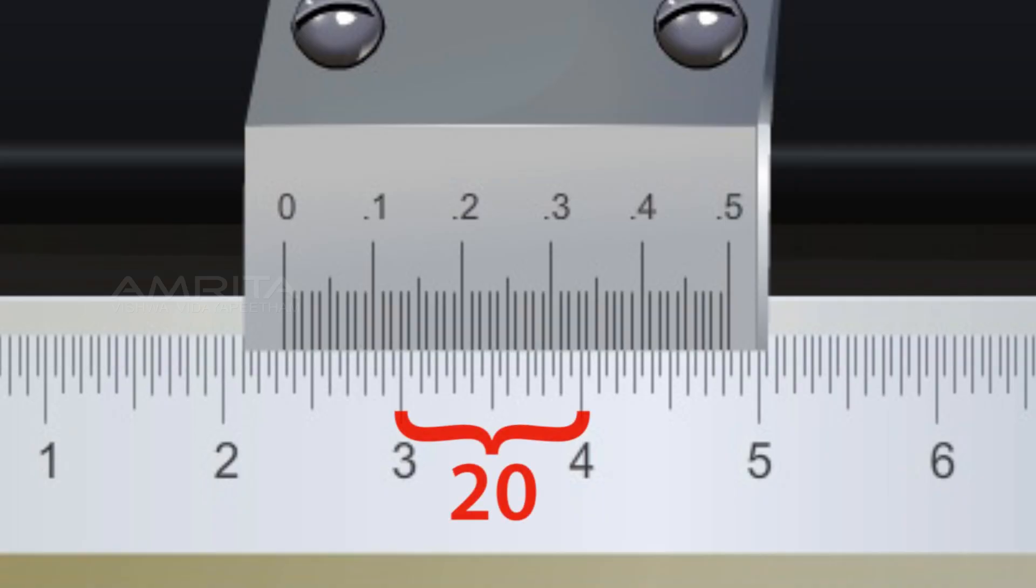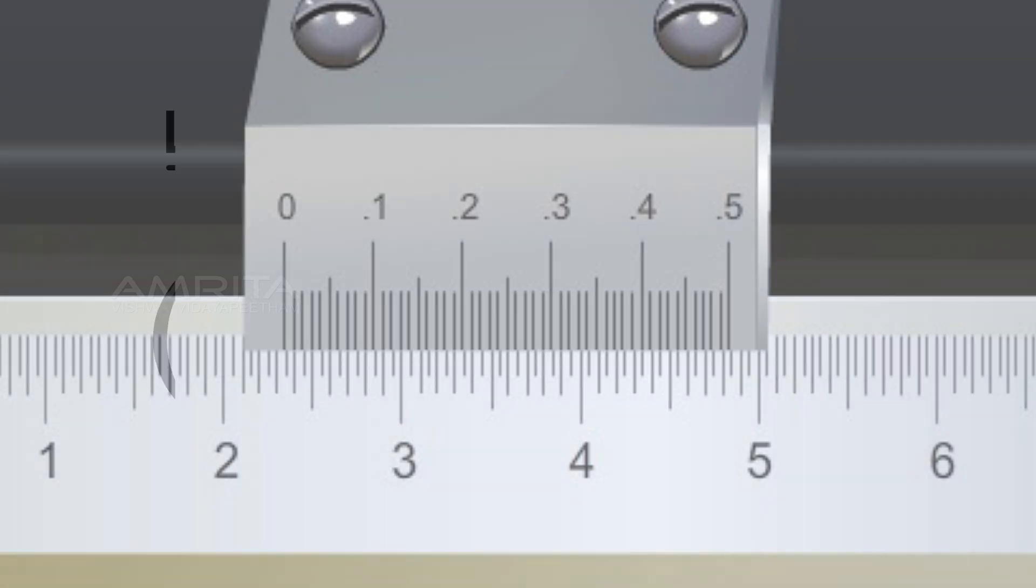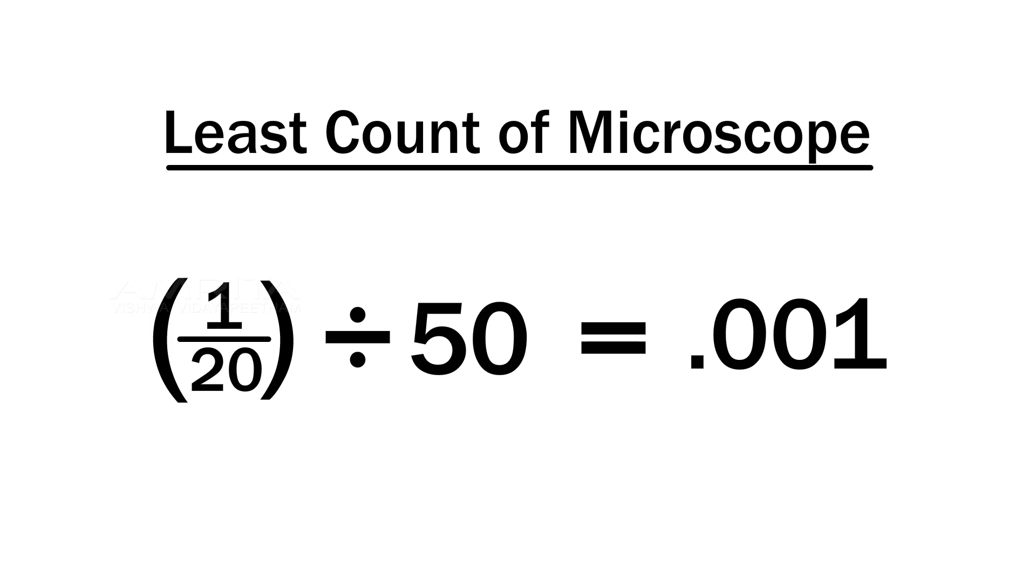Calculations: The main scale has 20 divisions between 2 cm readings and the vernier scale has 50 total divisions. So, the least count of the microscope is 1/20 divided by 50, which equals 0.001 cm.